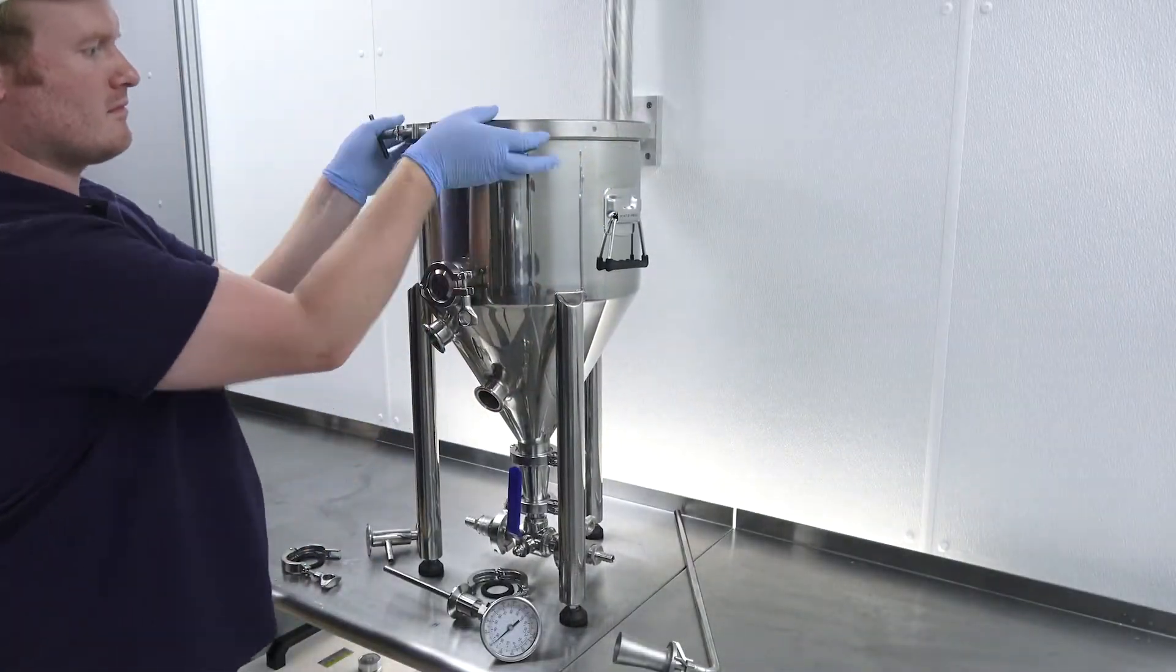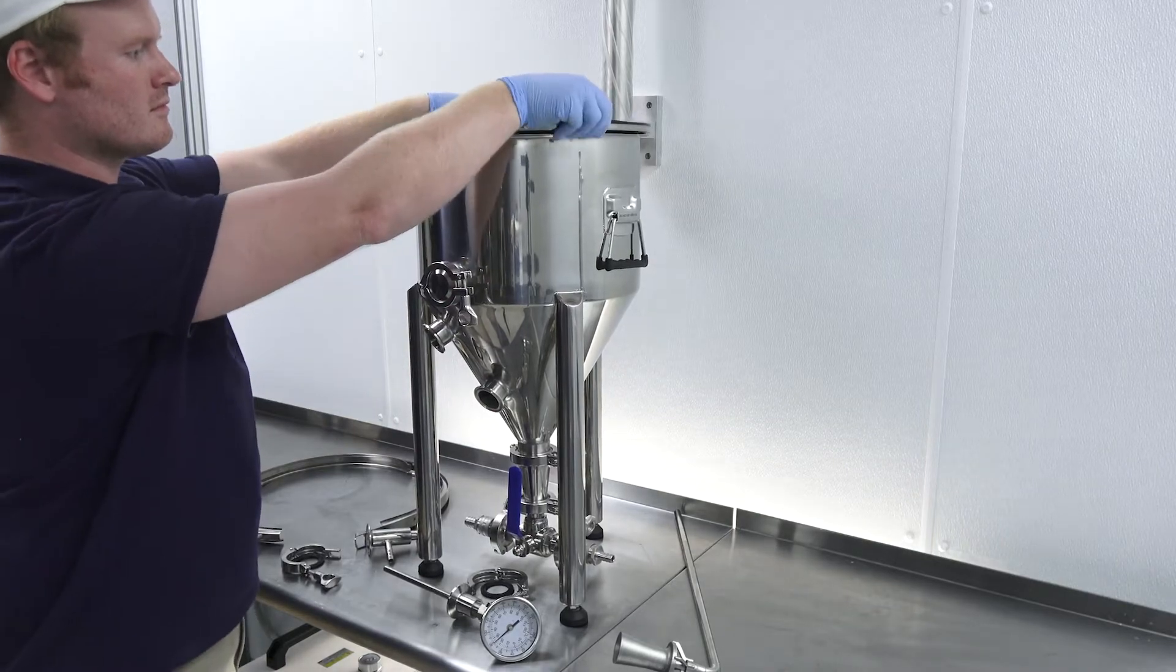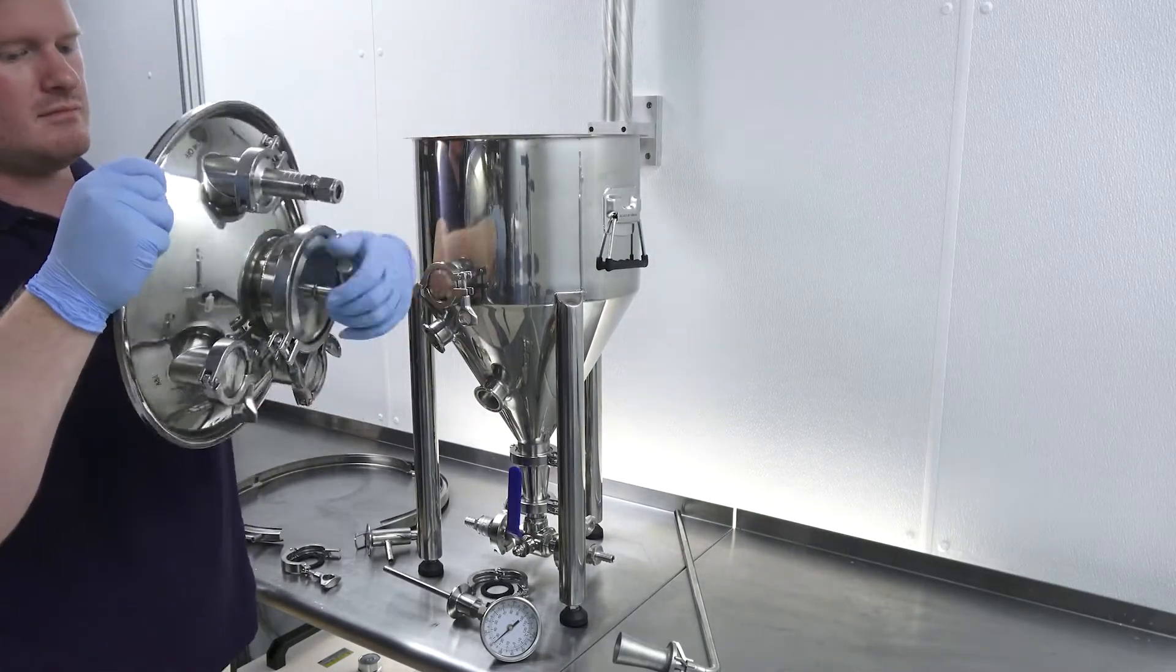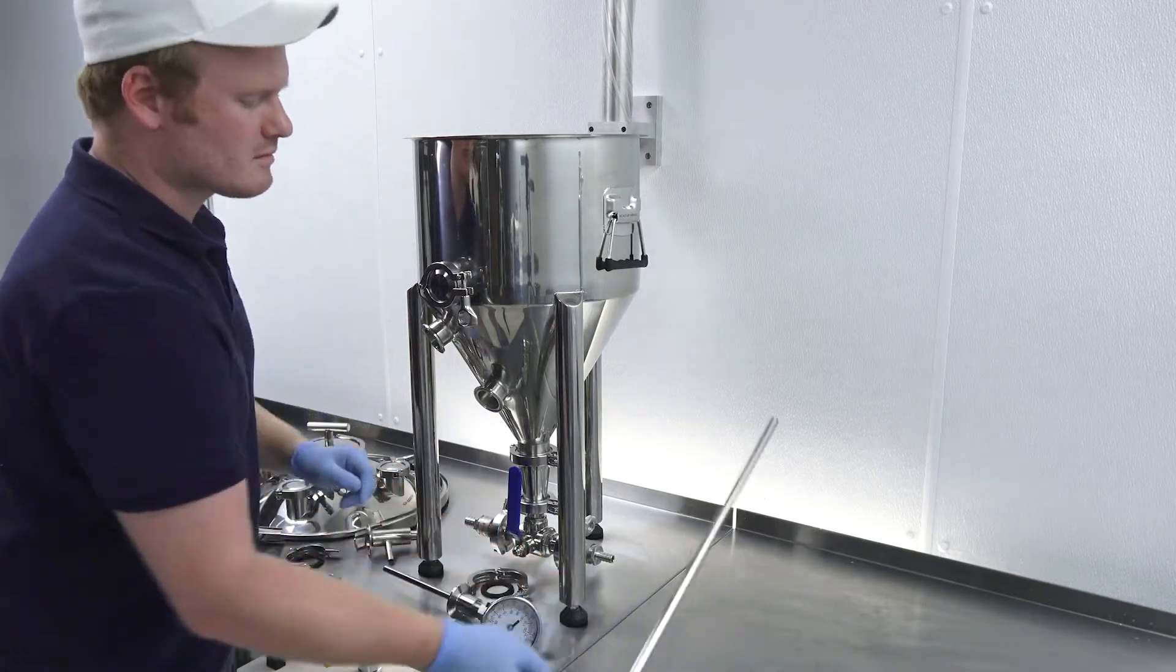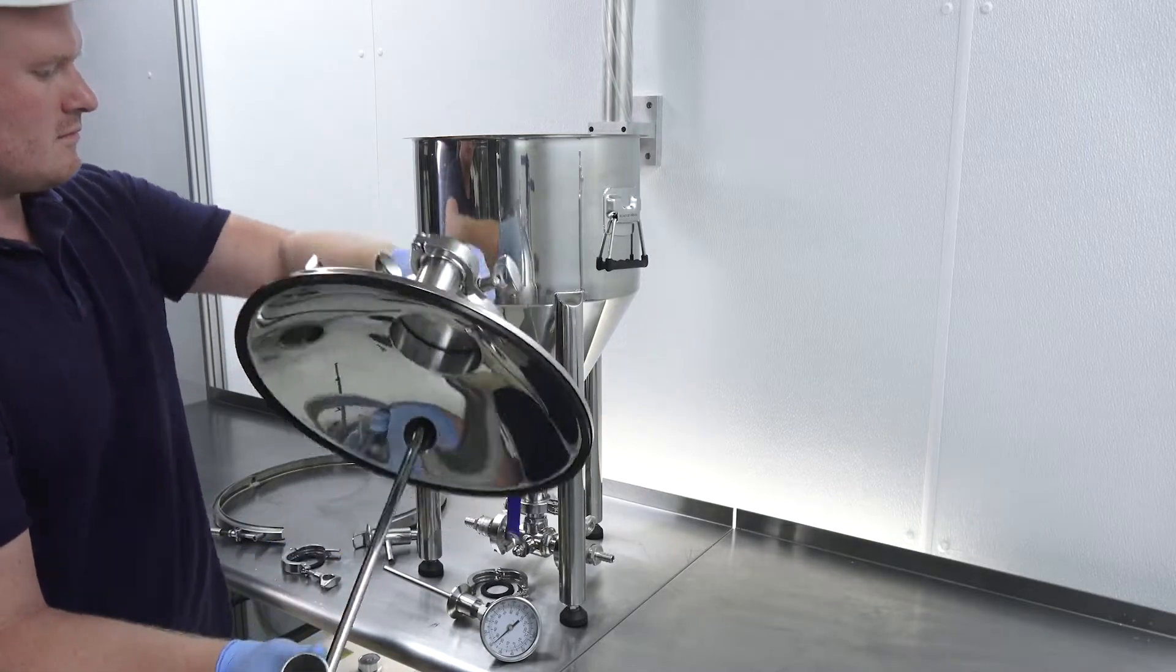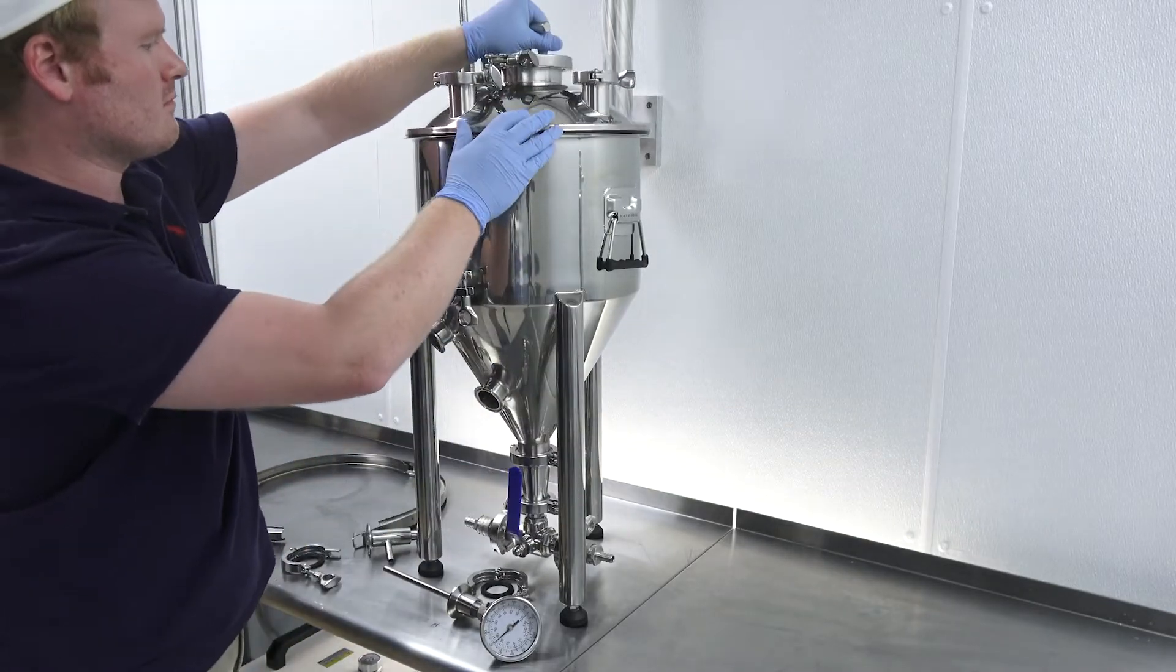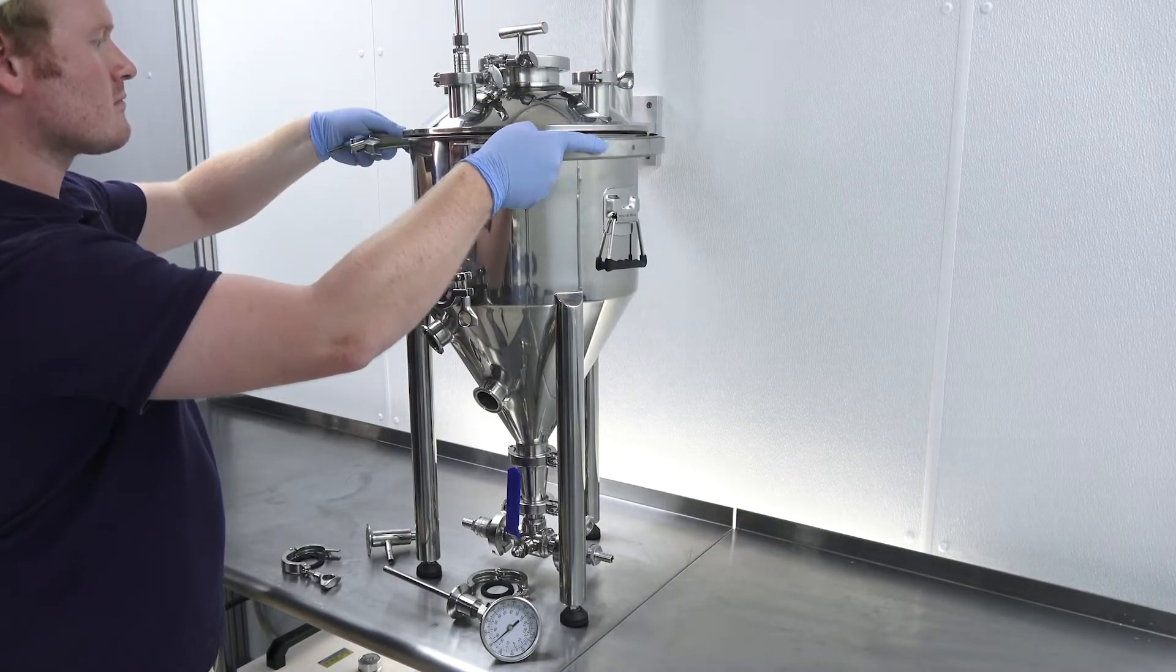Now it's time to assemble the tank. Remove the lid clamp, remove the tank lid assembly. Insert the venturi mixing dip tube, place the lid assembly upright upon the tank, reinstall the clamp.